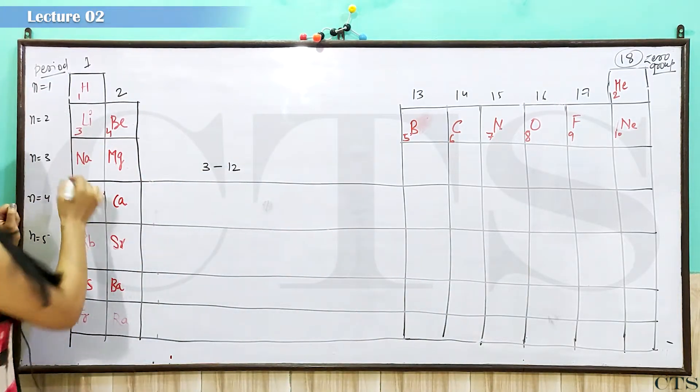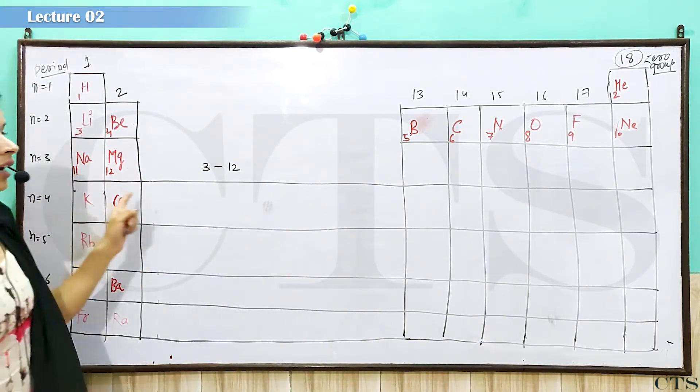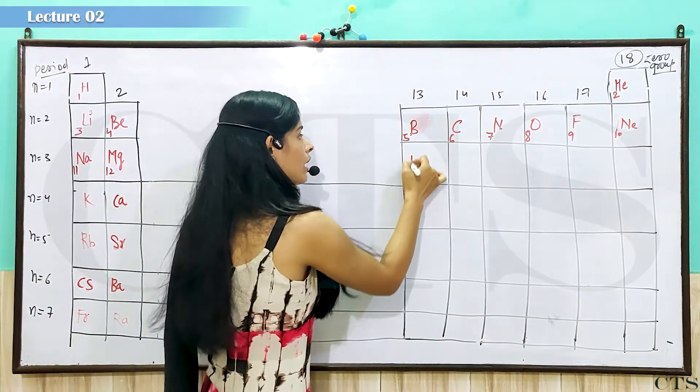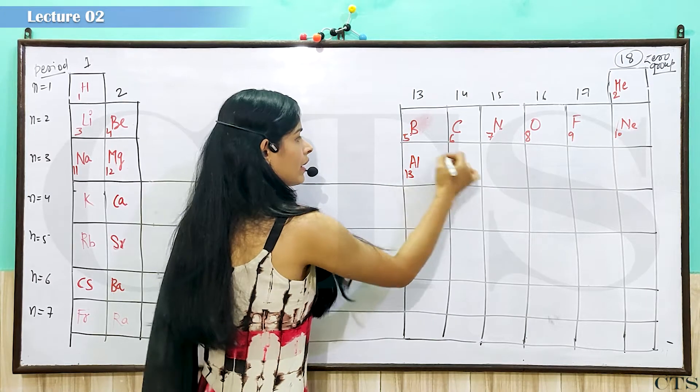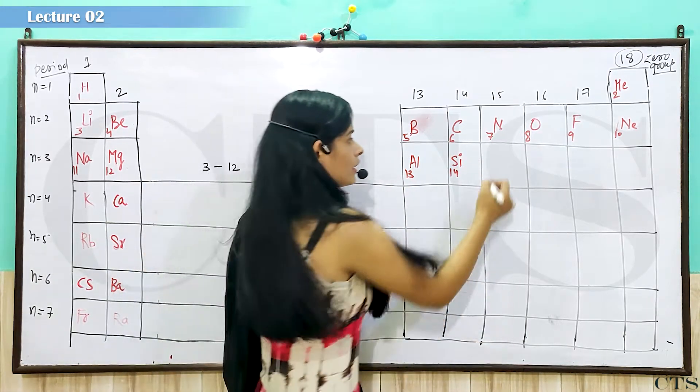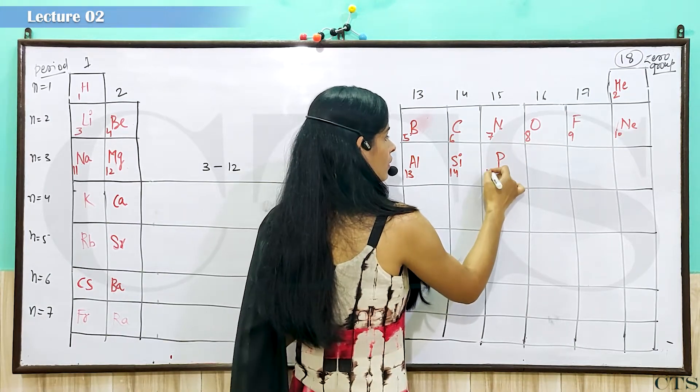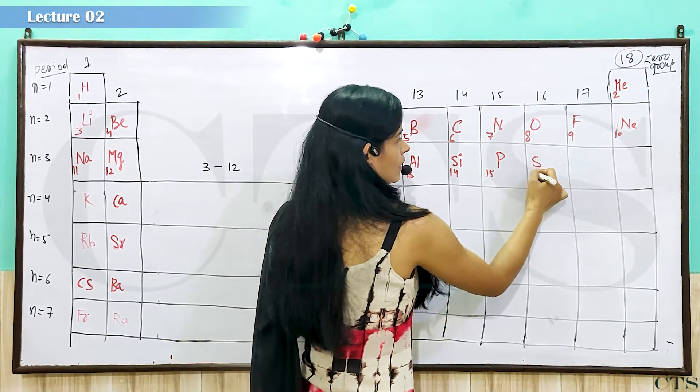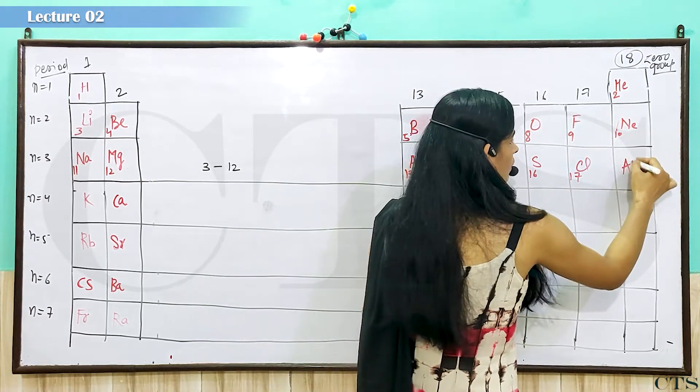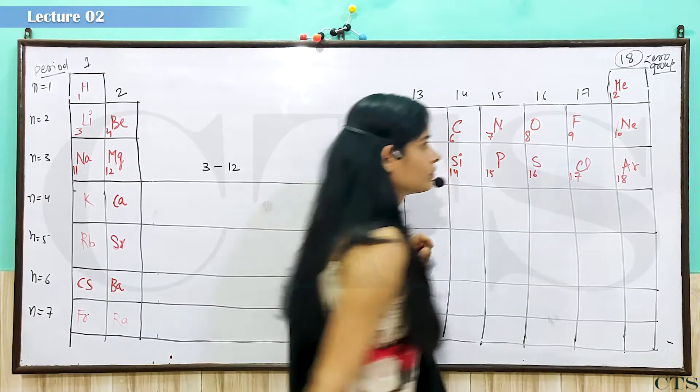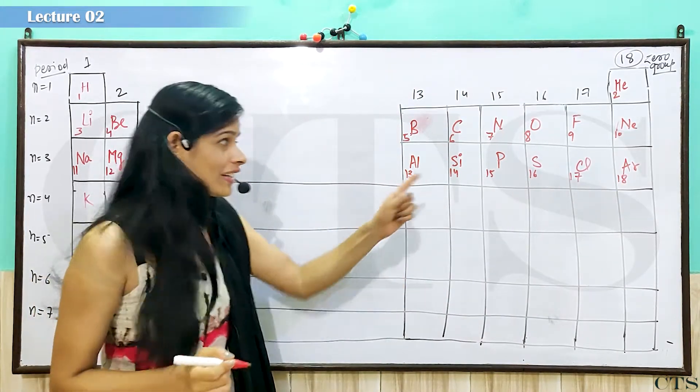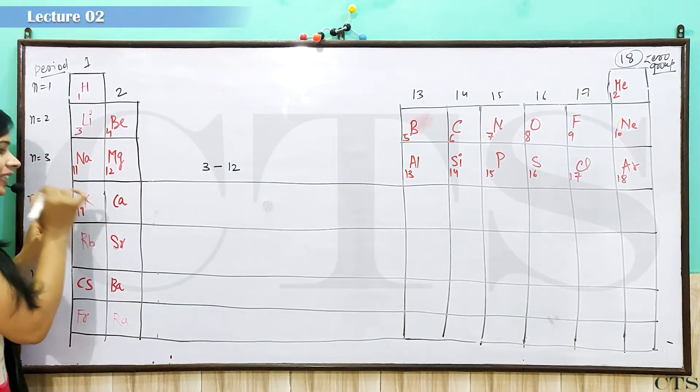Aap dhekhye, eleven, twelve, yahaan pher joh bhi element aega, uska kitna ho na chahi, thirteen, or hota bhi hai. Yahaan pher joh bhi element aega, uska kitna ho na chahi, fourteen. Yaha fifteen, yaha sixteen, yaha seventeen, or yaha eighteen. Dan beita, itni baat semaj baariya, chaloo roo se chal raha sab kuch. Yani ki aagla number kya aana chahi, nineteen.